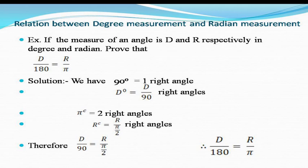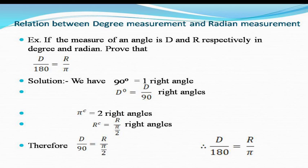Now let's see the relation between degree and radian measurement. If D is the measure of an angle in degrees and R is the measure of the same angle in radians, then the relation is D/180 = R/π. The proof: since 90° equals one right angle, D degrees equals D/90 right angles. Since π radians equals two right angles, R radians equals R/(π/2) right angles. Setting these equal gives D/90 = R/(π/2), which simplifies to D/180 = R/π.